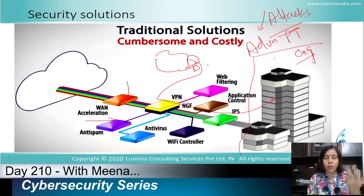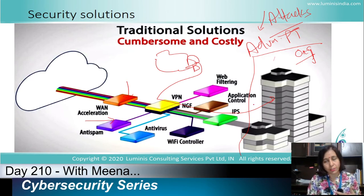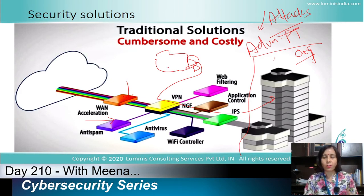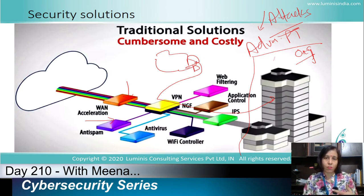Remote users are accessing our resources from different locations. We cannot allow them direct access because they may have malware on their computers, which would infect our network. So we need VPN security — the best VPN software or services for our company.